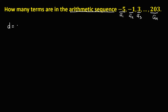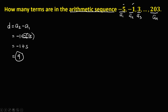Using the formula d equals a sub 2 minus a sub 1, to solve for the common difference: a sub 2 is negative 1, then minus a sub 1, which is negative 5. Simplifying, we have negative 1, and this double negative becomes positive. So therefore, the common difference is positive 4.